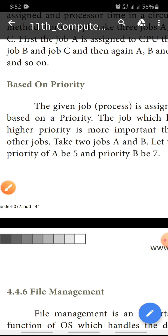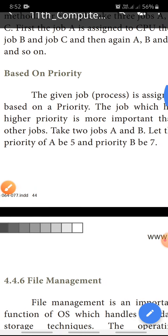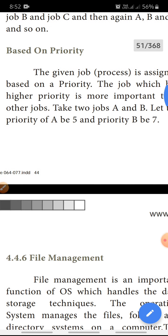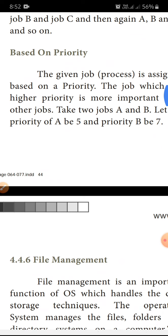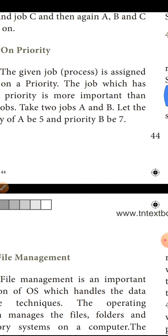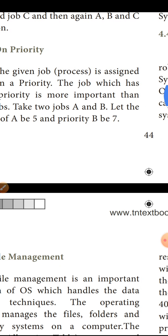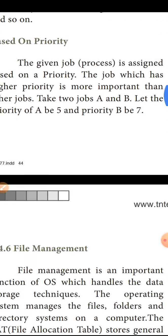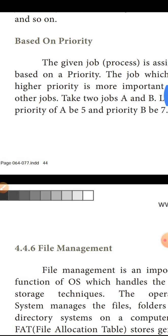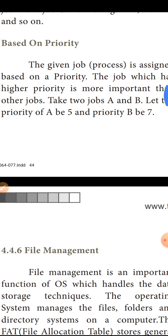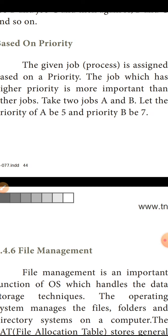The job which has the higher priority is more important than other jobs. The job with the highest priority is executed first. Take two jobs A and B — let the priority of A be 5 and priority of B be 7. So the highest priority is B.